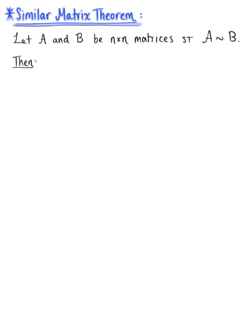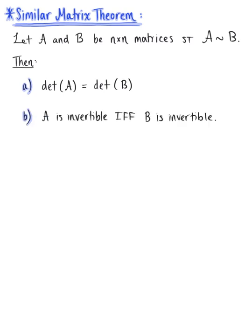Then with these conditions, the following holds true. Property A says that the determinant of matrix A is equal to the determinant of matrix B. Property B says that matrix A is invertible if and only if matrix B is invertible.